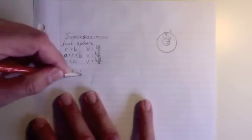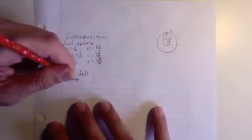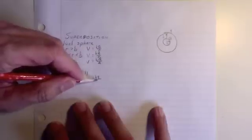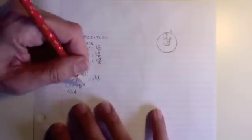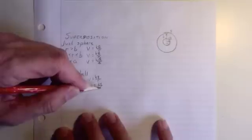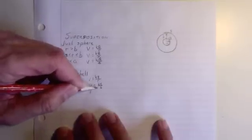Now let's do just the shell. It's going to look very similar. For r greater than b, it ends up being just kq over r. At b, it ends up being kq over b. So for a less than r less than b, and indeed also r less than a, the voltage is going to be kq over b.